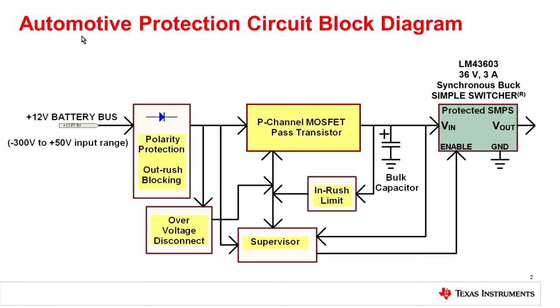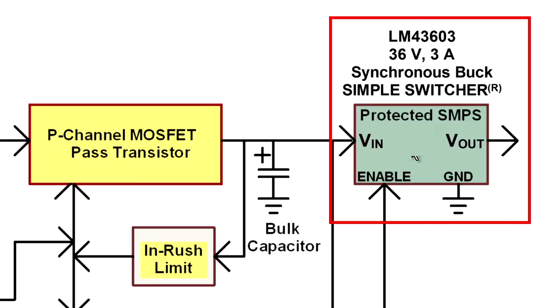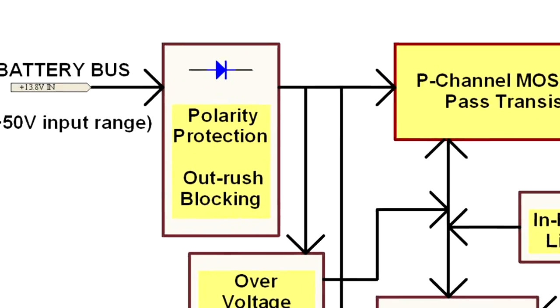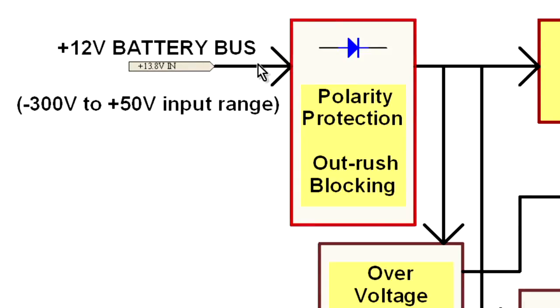Let's talk about this circuit in block diagram form first. So this is a block diagram of the application circuit. On the right-hand side is the LM43603 application board, and in front of it, we're placing some added circuitry to protect it from transient events that can happen on the battery bus.